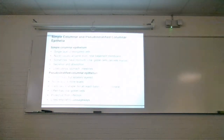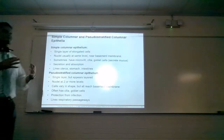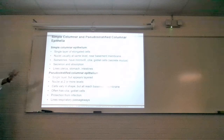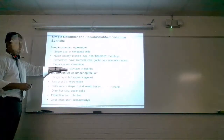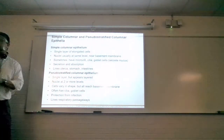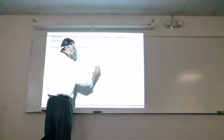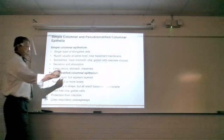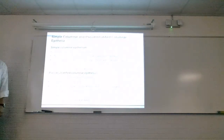Simple columnar epithelium is the blue and red finger-like tissue we saw in lab — the digestive tract. This one has two things you need to know: goblet cells, which secrete mucus, and a surface modification called microvilli.